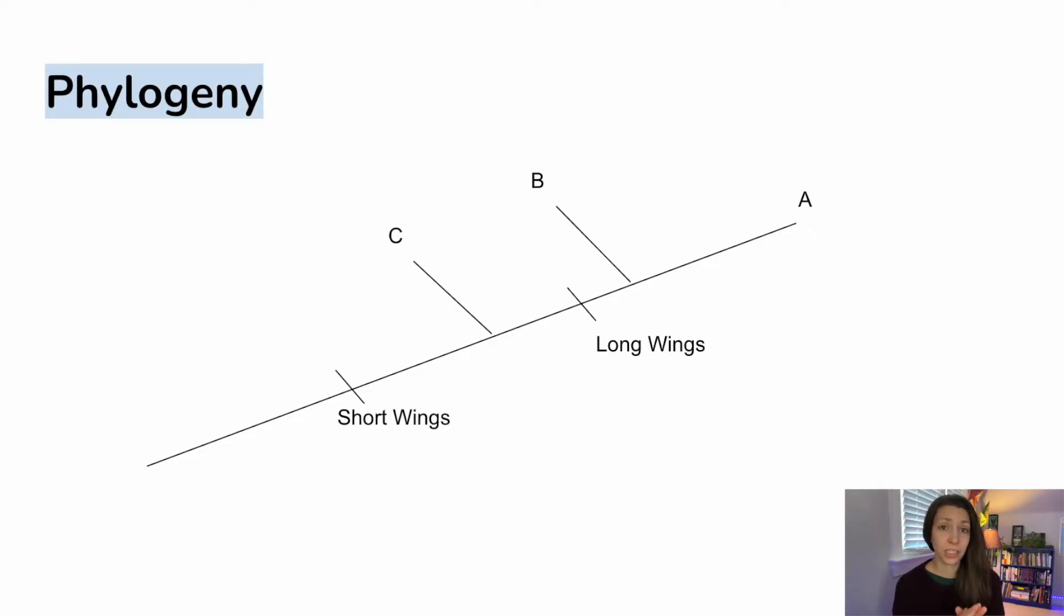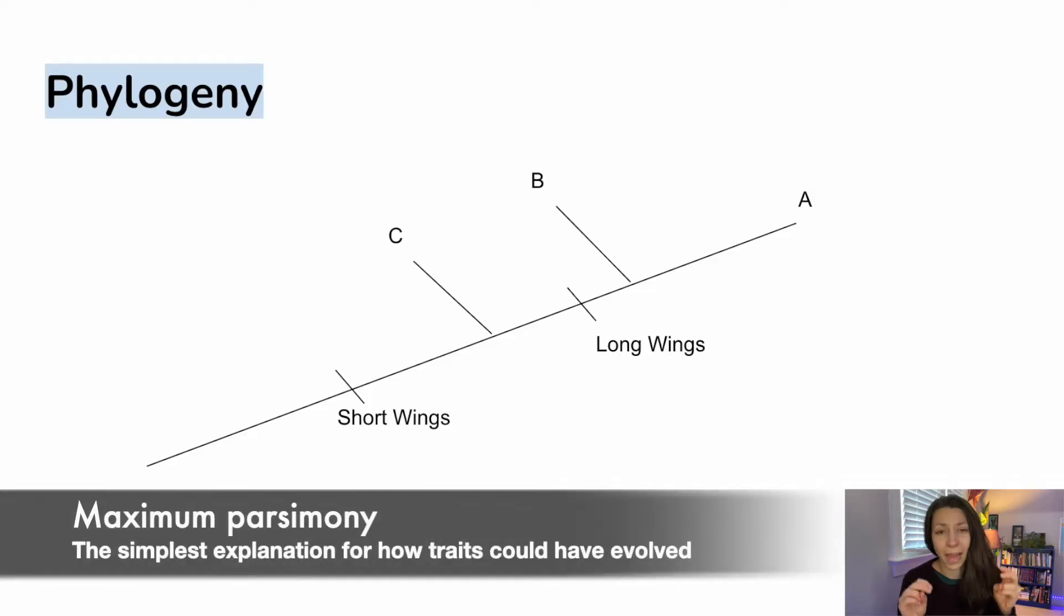Usually when we're creating trees, if we're going to be doing this on our own, we want to create one that is the simplest explanation for how these traits could have evolved. That's called maximum parsimony.